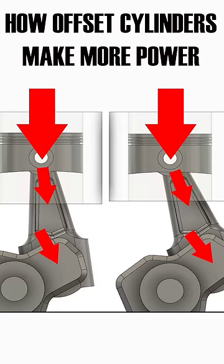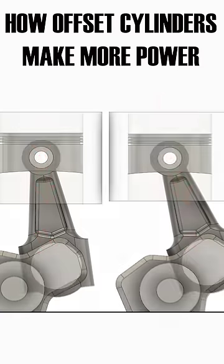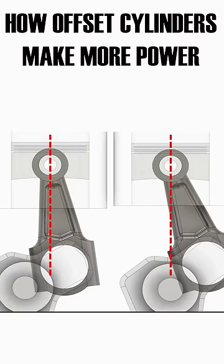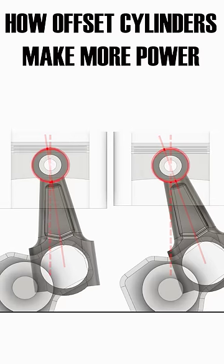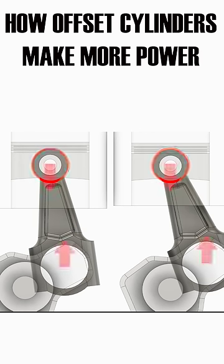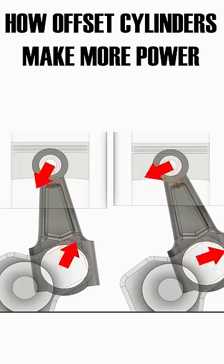The problem lies in the fact that the rod is inclined at a certain angle. The downward force exerted on the rod is directed at the small end of the rod, meaning that this force is actually trying to spin the rod. As the rod tries to flip over, it ends up pushing the piston against the cylinder wall.